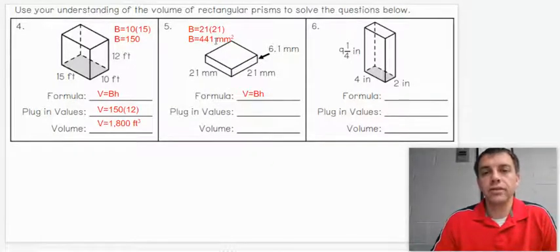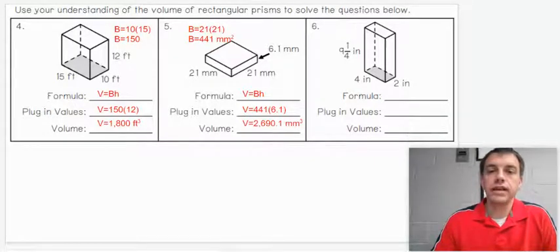When we multiply it by the height, that's how we get the cubed answer. So plug in the values. We have 441 times, we said the height was 6.1. What do you get as your solution? 2,690.1 millimeters cubed.